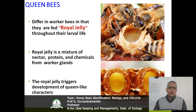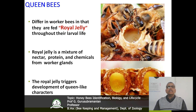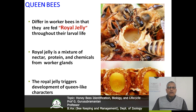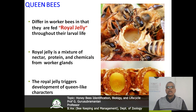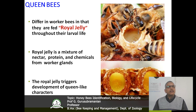Now we are going to discuss about the queen bee. It differs from the worker bee because normally it feeds only on royal jelly throughout its larval period. Whereas the worker bee feeds only on royal jelly for up to three days, after that it may feed on nectar, pollen as well as honey. Royal jelly is a mixture of nectar, protein and chemicals that is secreted from the worker glands. The royal jelly triggers the development of queen-like characters.